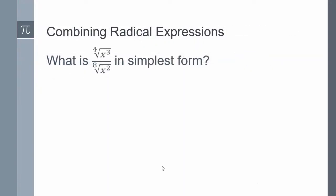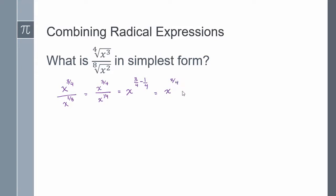Combining radical expressions: what is the fourth root of x cubed divided by the eighth root of x squared in simplest form? I can't divide as-is because the indexes are different. I'll rewrite in exponential form: the fourth root of x cubed is x to the power of 3/4, over x to the power of 2/8. Simplifying 2/8 gives x to the power of 1/4. Since bases are the same, I subtract: 3/4 minus 1/4 gives x to the power of 2/4, which simplifies to x to the power of 1/2, or the square root of x.